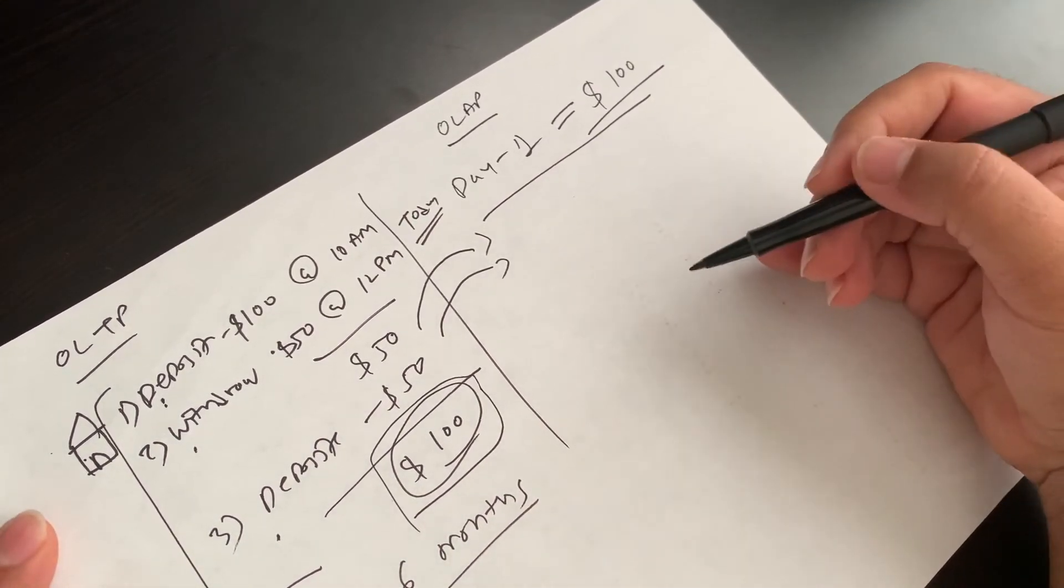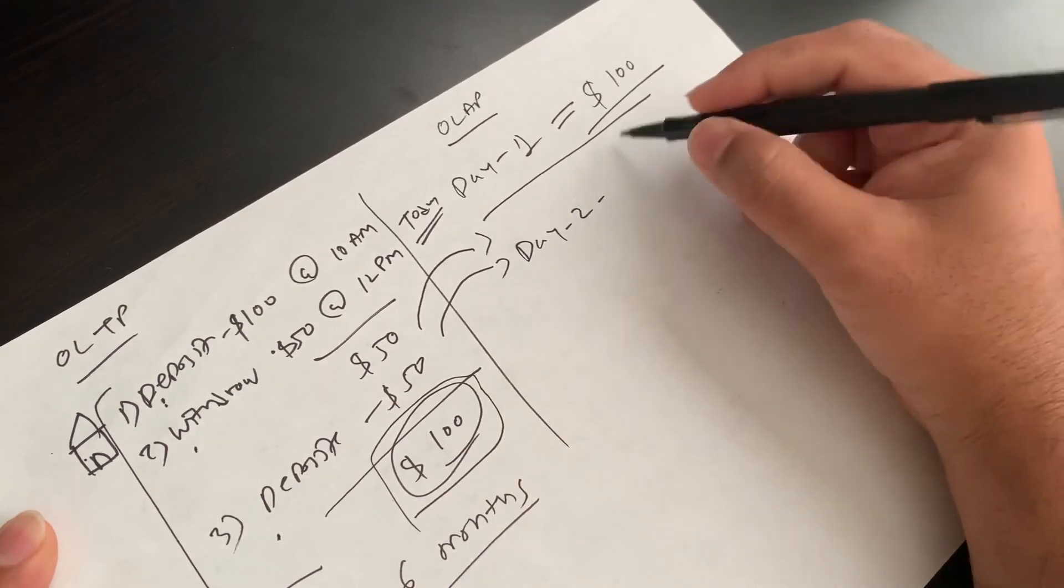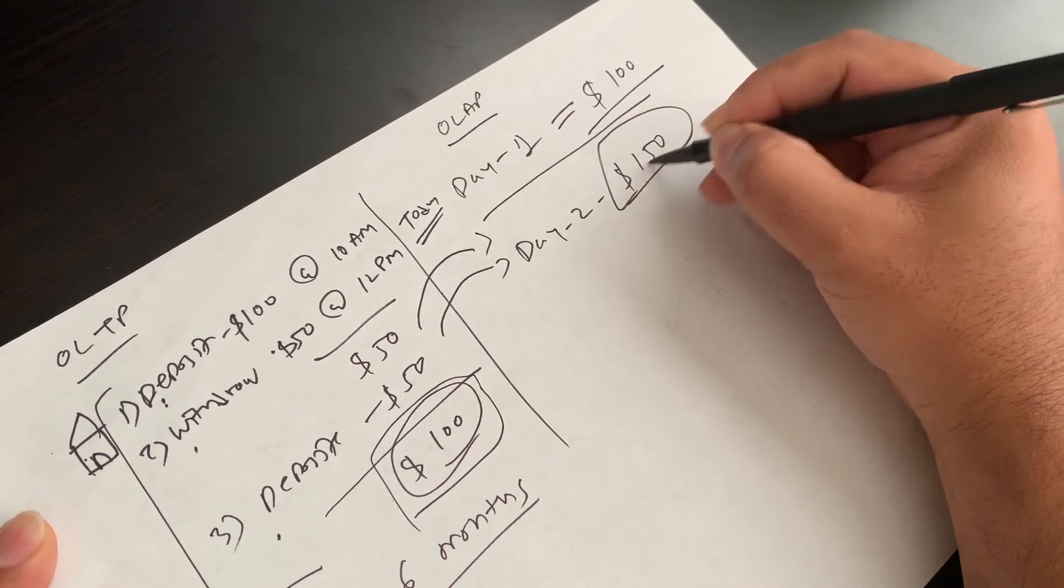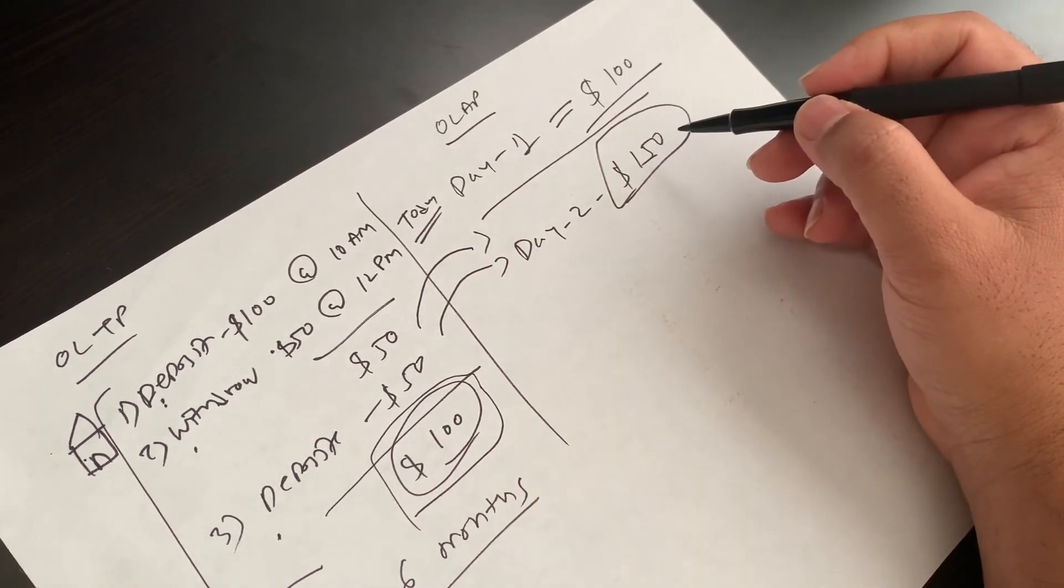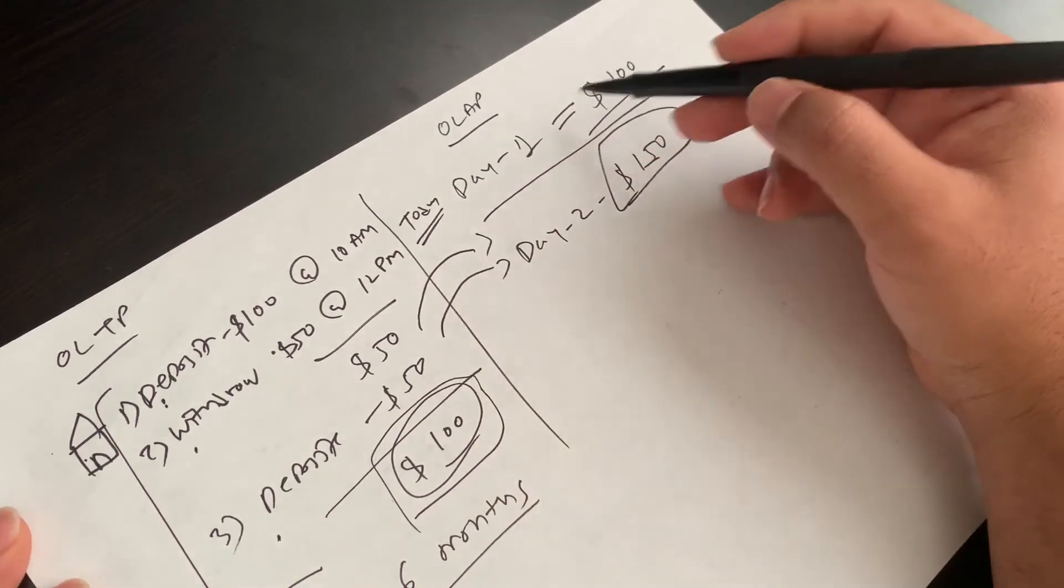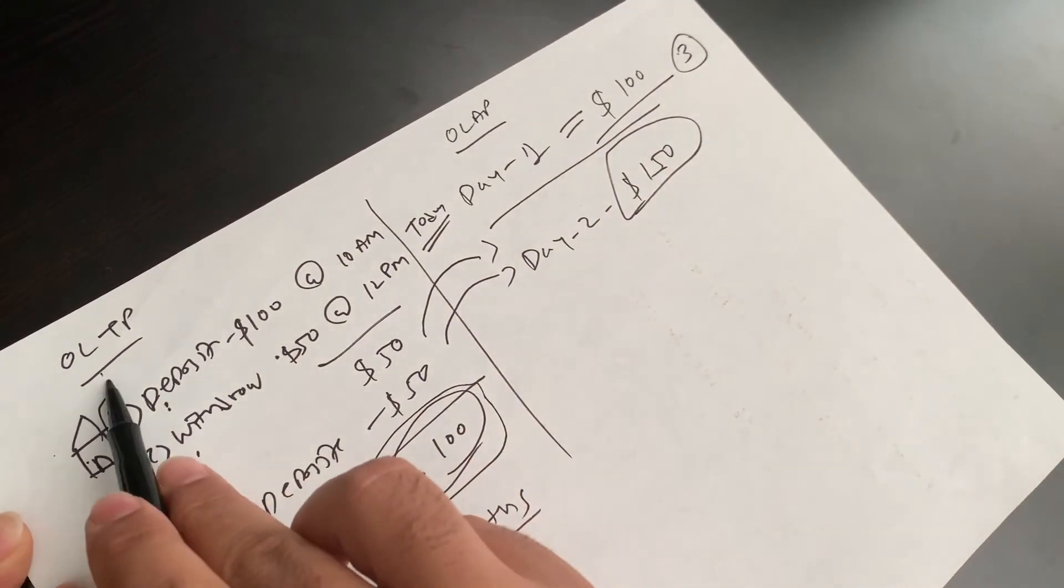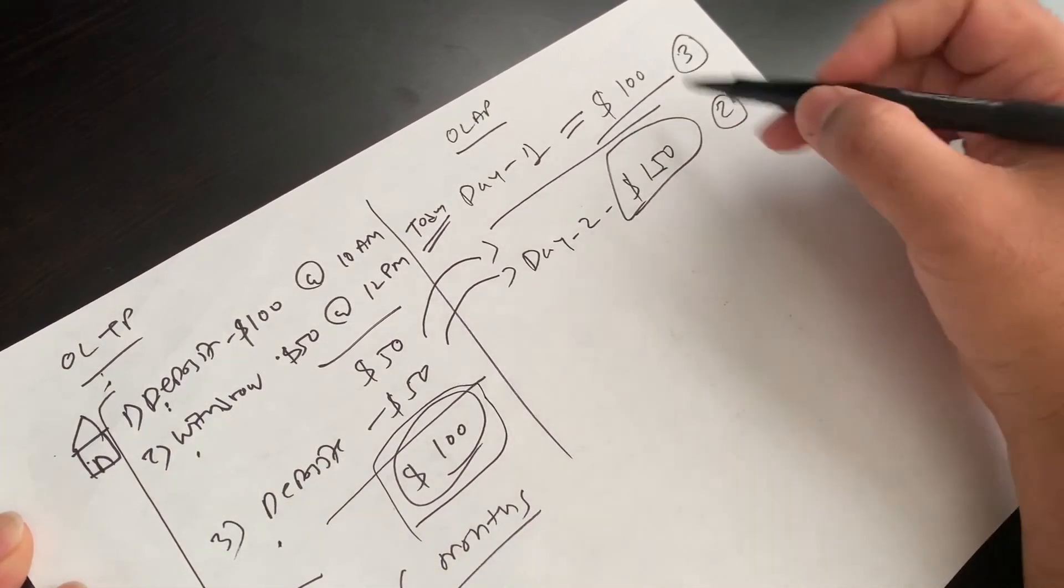On day two, you did two transactions, but they will just enter, let's say $150 is your final balance. That is the amount you had for day two. So they don't track all here. In this case, it should be three transactions in OLTP. Here you did two transactions, but in OLAP only one entry.